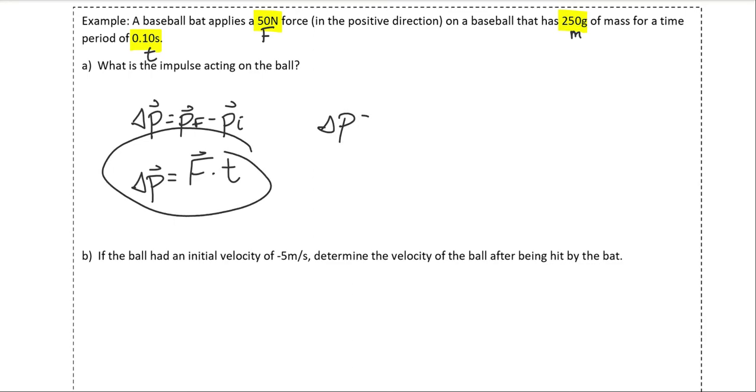My impulse is equal to my force multiplied by the time. And the direction is actually given as positive. So I will just be able to keep my value here as positive. 50 multiplied by 0.10 equals 5.